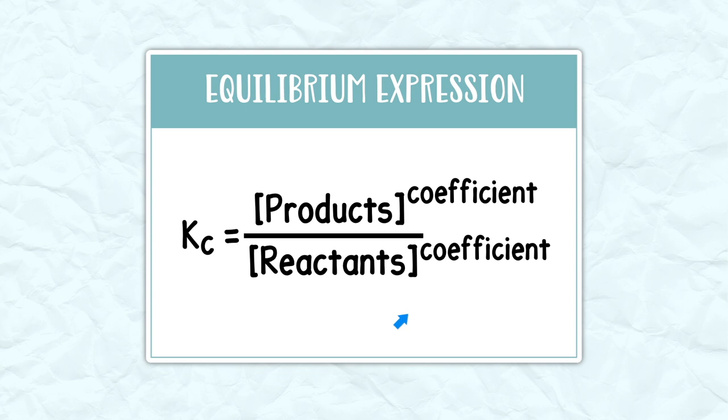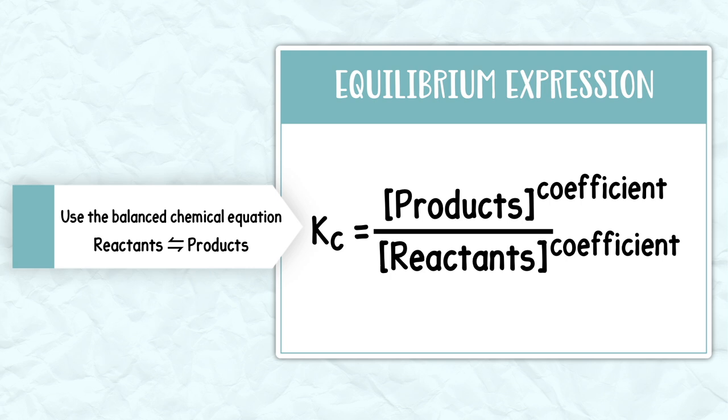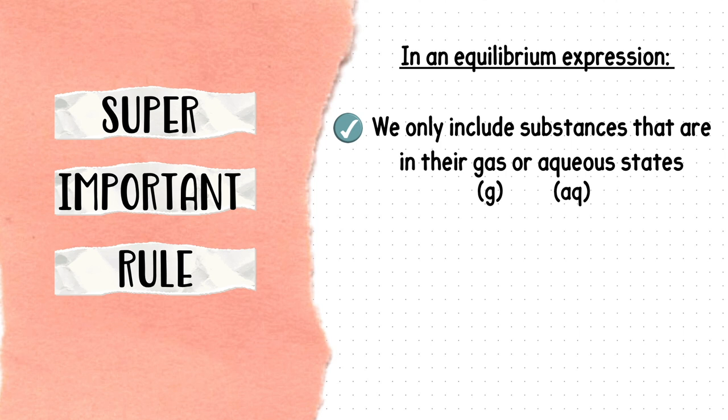The brackets refer to concentration, and the C and Kc also refers to concentration. To find the equilibrium expression of a reaction, we must use the given balanced chemical equation. A super important rule to know is that in an equilibrium expression, we only include substances that are in their gas or aqueous states. We never include solids or liquids.